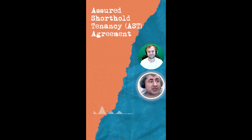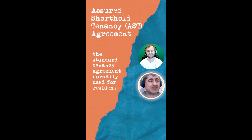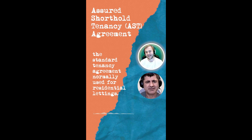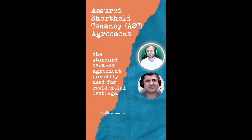The next term is AST — Assured Shorthold Tenancy Agreement. This is a standard tenancy agreement normally used for residential letting.